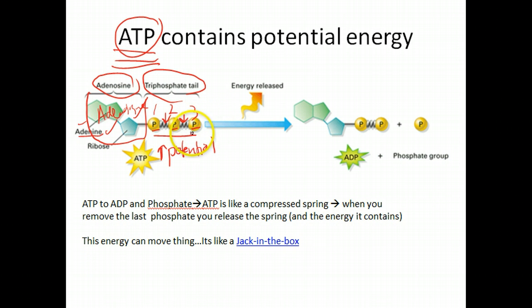Now, if you wanted to release some of that energy, all you'd have to do is basically break off this last phosphate. And this last phosphate would go somewhere. And what you'd be left with is ADP. So adenosine diphosphate, there's two, and then this extra phosphate, which would go away.